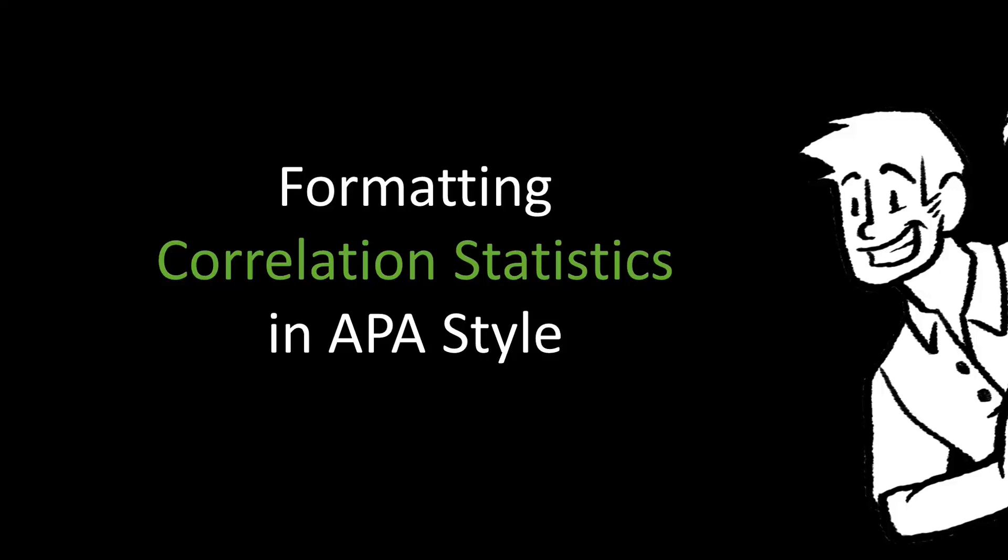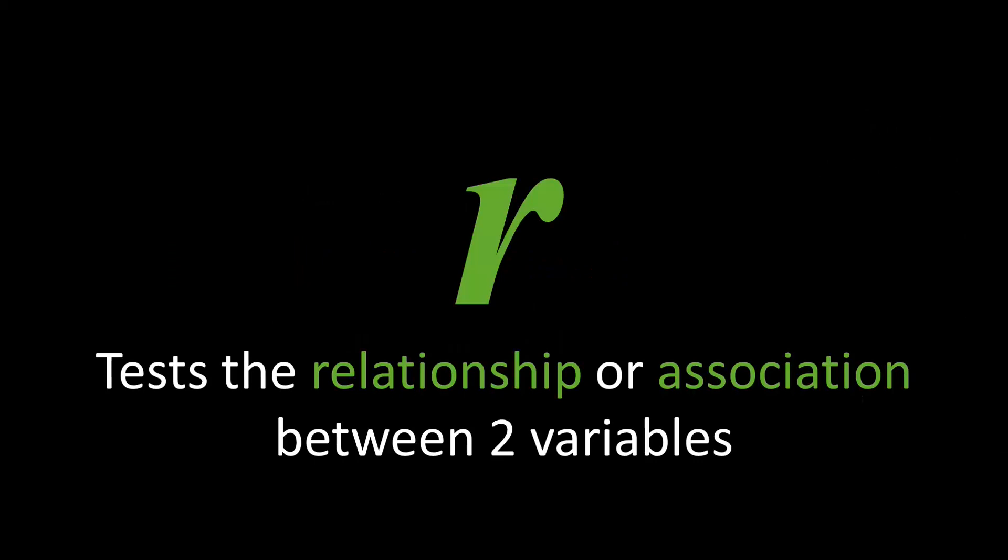In this supplement to the APA survival guide we'll learn how to format correlation statistics. As shown here, a correlation is represented by a lowercase r. Correlations test the relationship or association between two variables.